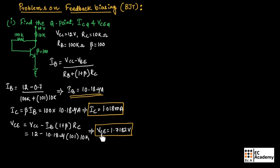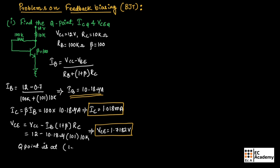So we got the values for IC and VCE. The Q point is available at IC equal to 1.018 milli ampere and VCE equal to 1.7182 volts.